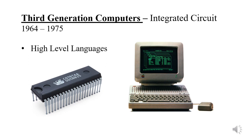A common feature of third generation computers is that they are even smaller than second generation computers — now small enough to fit on a table. The shape of the desktop computers used today began to appear in the third generation. Due to its small size, electricity consumption and heat generation decreased, and efficiency increased.